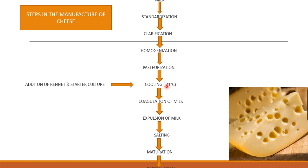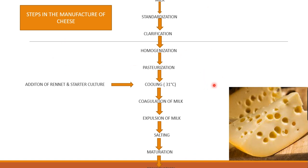The starter culture acidifies while the rennet initiates coagulation of the milk. The coagulum settles, the whey is expelled, and the cheese bricks are salted to stop bacterial growth. They are then ripened — that is, matured — and finally preserved. This completes all the steps of cheese production.